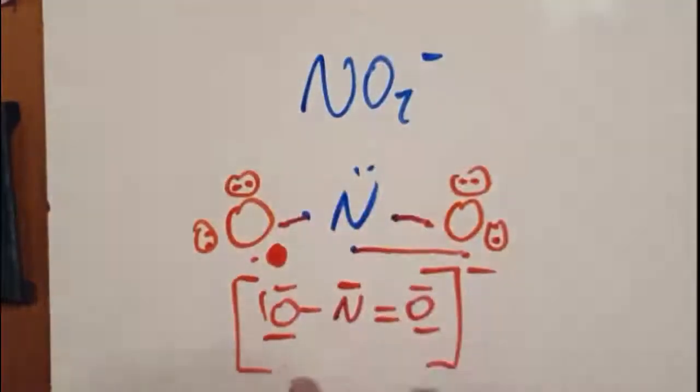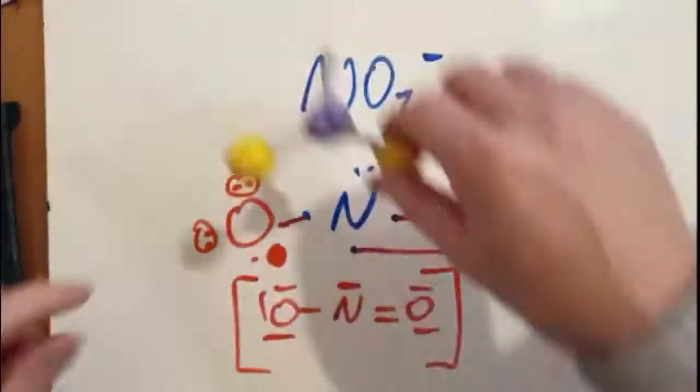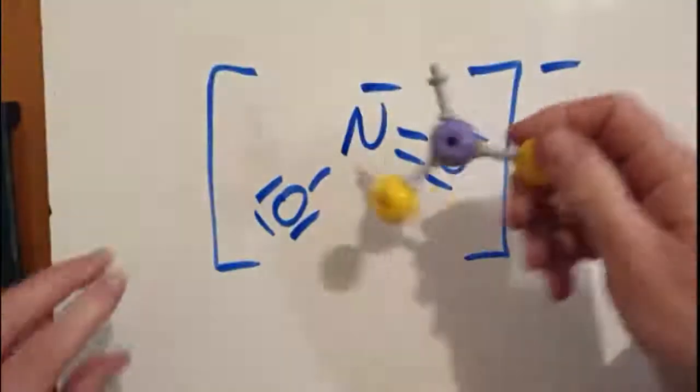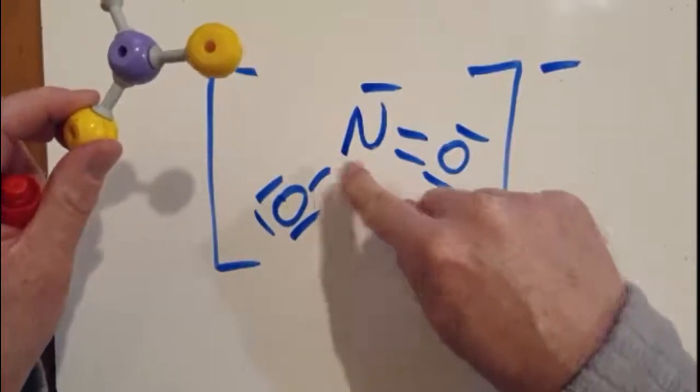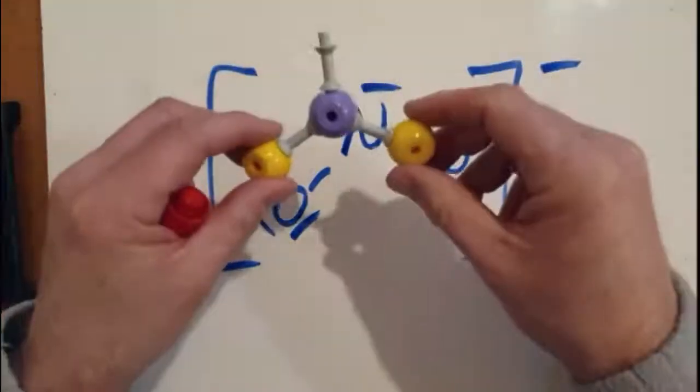Let's talk about the shape. Well, it's tempting to say it's linear, but it just isn't linear. It's actually this shape here. It's a bent shape. So the reason it's bent is the central atom has 3 electron domains. 1, 2, 3 electron domains. And one lone pair.